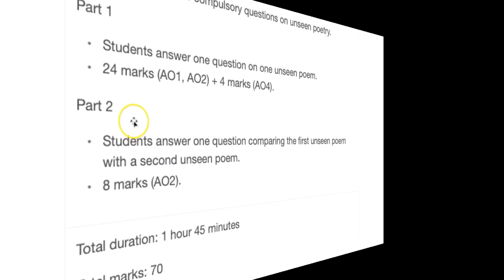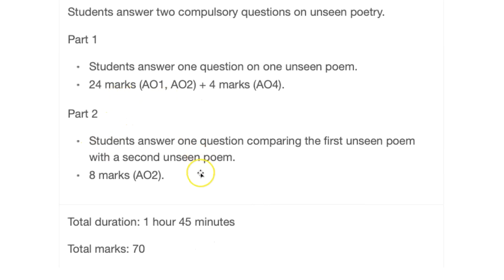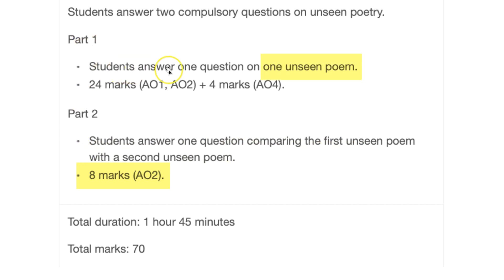Once you've written about that unseen poem, you then have a comparison question where you're given a new unseen poem to compare it to. This is always a Mickey Mouse question because it only carries eight marks — it's barely worth doing in some ways. Students usually end up writing much too much for this one and not enough for the unseen poem on its own, which counts for three times as many marks. Please don't let that be you. Even a bad answer is still going to get you four marks and a brilliant answer will probably only get you six marks, so put your effort into the single poem question.